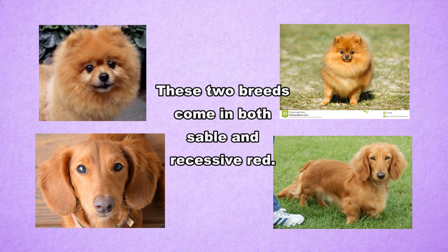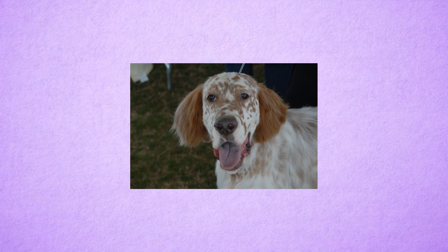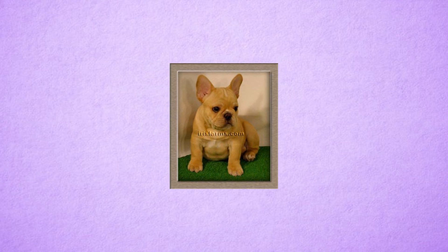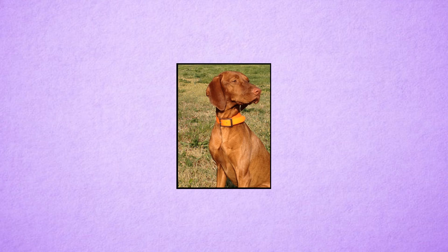Other breeds that do have the little e little e genotype are the Beagle, the Brittany Spaniel, the Cardigan Welsh Corgi, the Chinese Shar-Pei, the Cocker Spaniel, the English Setter, the English Pointer, the Flat Coated Retriever, the French Bulldog, the Irish Setter, the Japanese Chin, the Poodle, the Portuguese Water Dog, and the Vizsla.